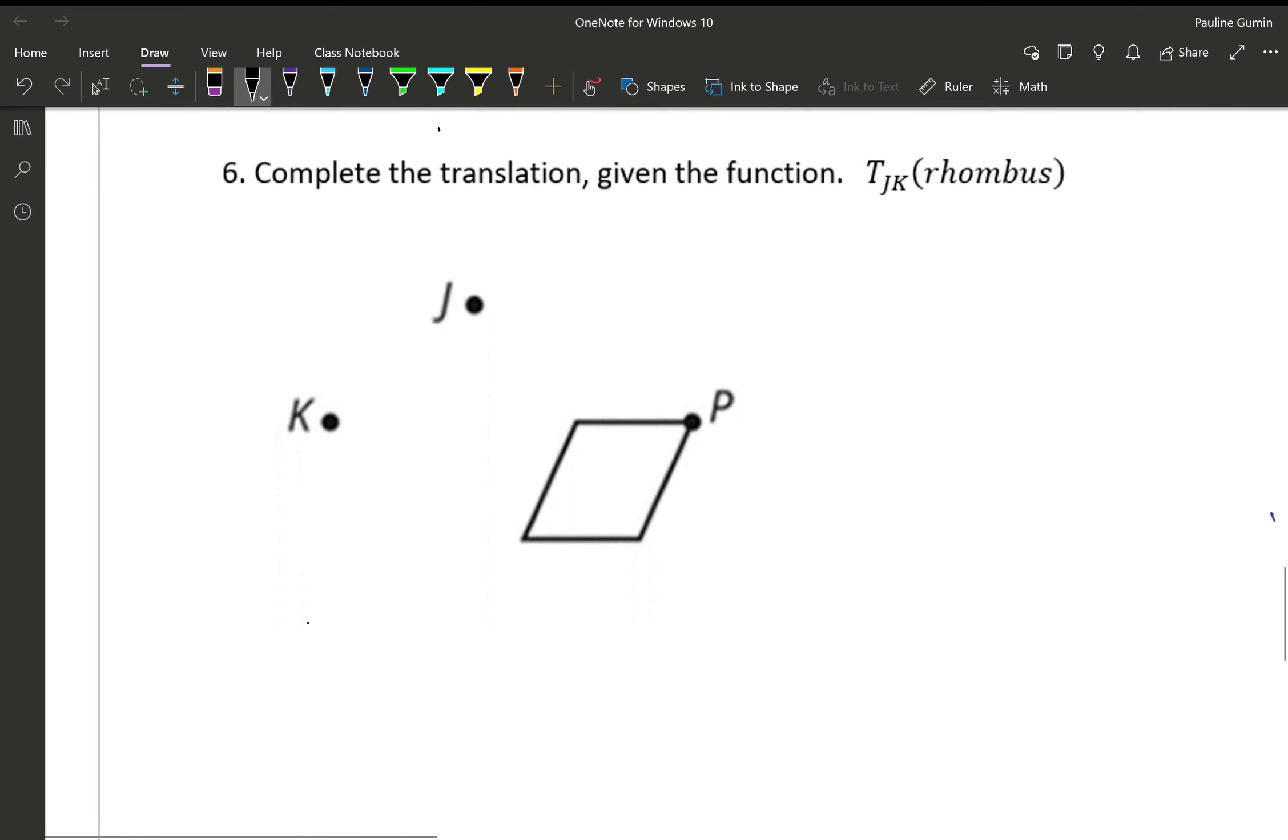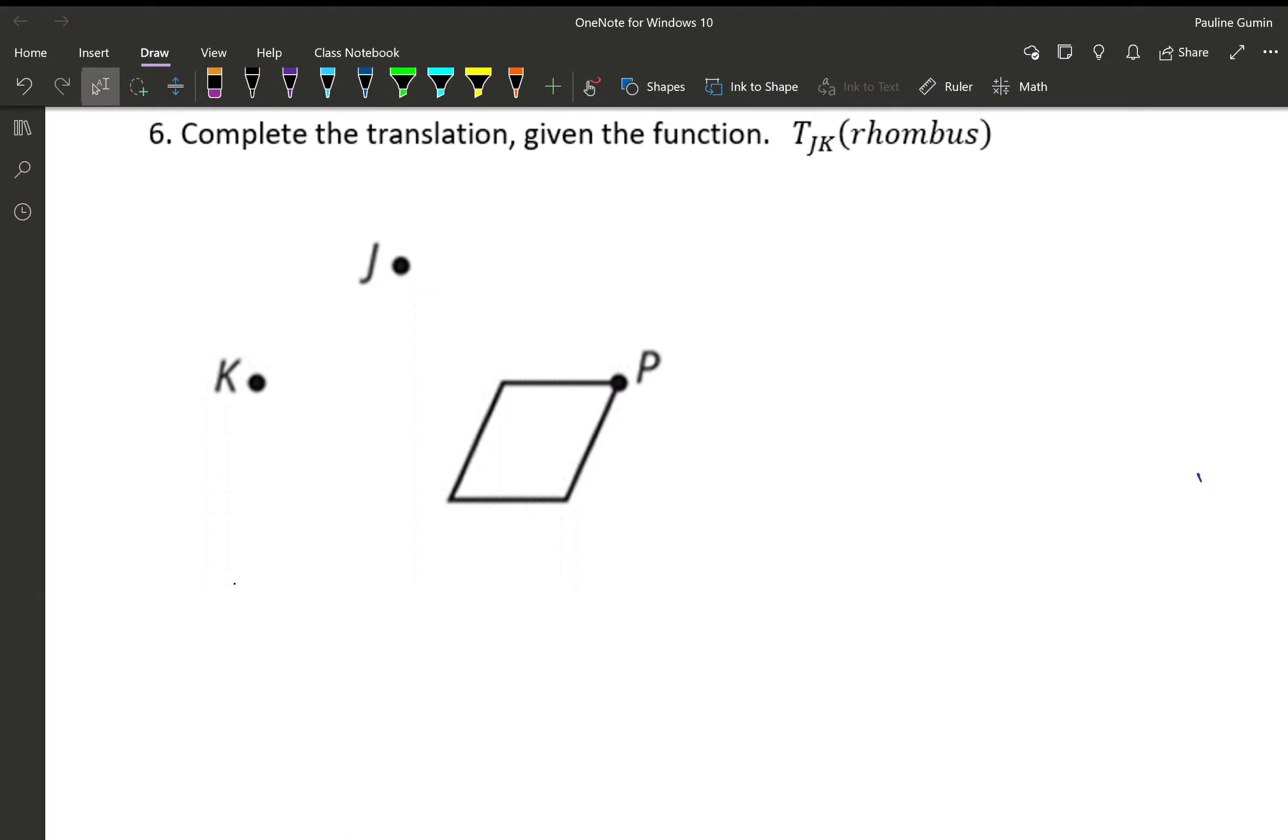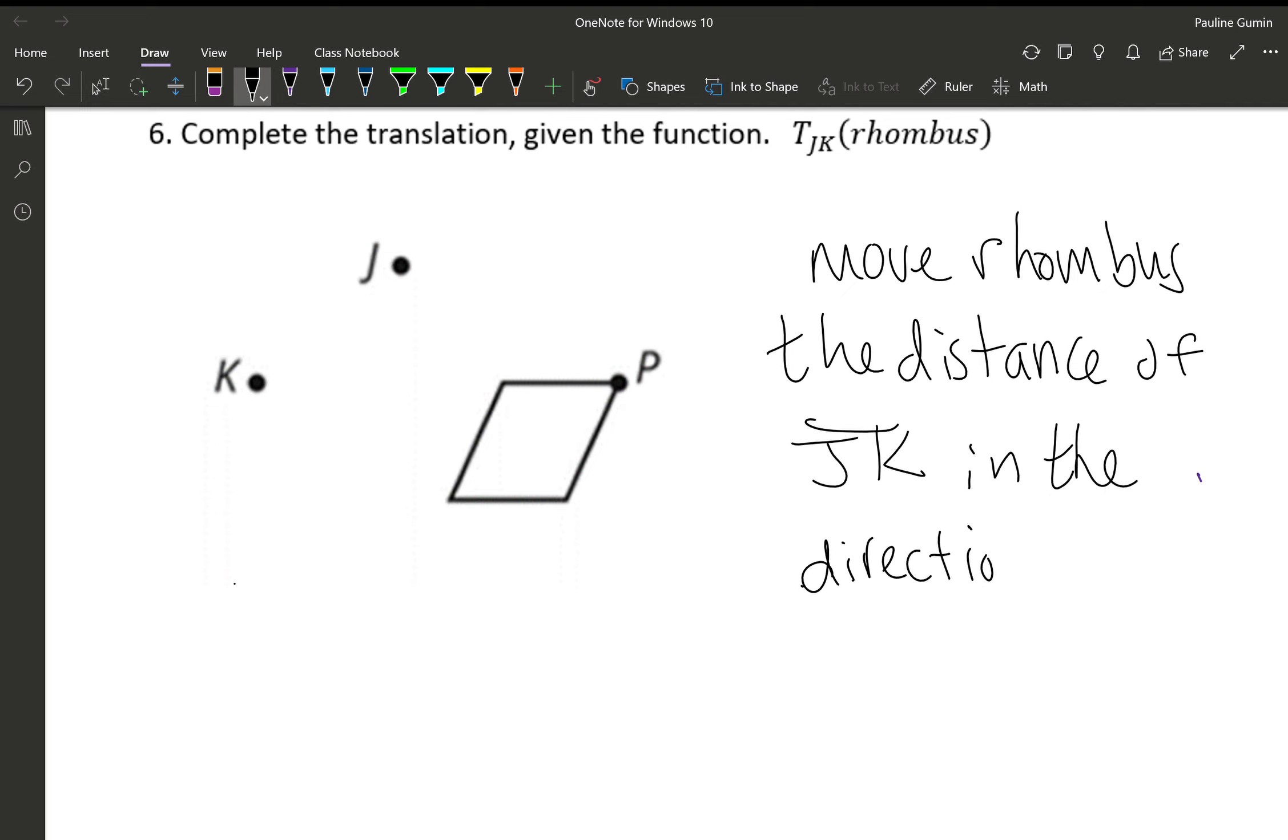And lastly, we have number six. Let's complete this translation. We have TJK of rhombus. So move rhombus the distance of JK in the direction of JK. Let's find the direction of JK. From J to K, it looks like I'm going diagonally downwards. Let's redraw that same segment. Put a new dot here. Make that P prime. And then we're going to do our best in drawing a rhombus.